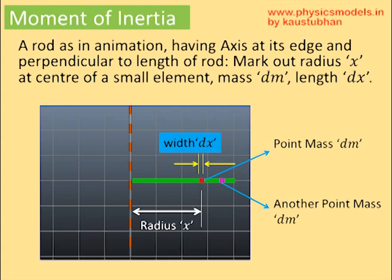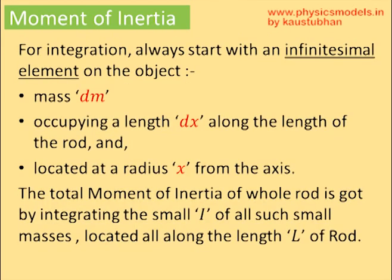Here is a side view of the rod showing the small point mass in red color dm. It's got a width dx, and it's located at a radius x from the axis. There are many such point masses throughout the length of the rod, and what we are going to do is to integrate the moment of inertia for all of them. So you have dm, dx, and x, and the first job is to find the moment of inertia for this small mass dm — only then we can integrate for everybody else.